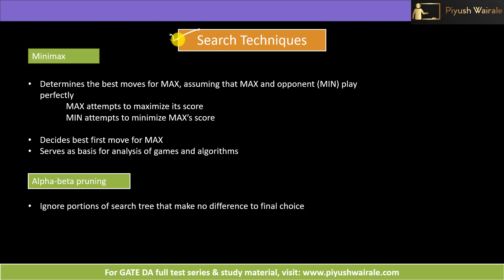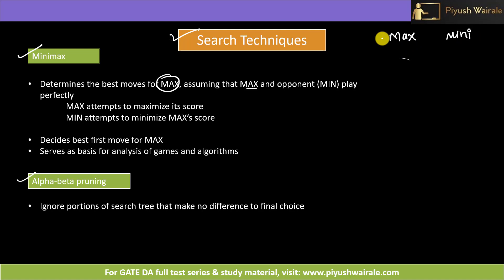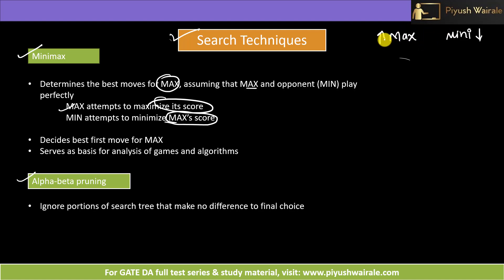There are different search techniques in adversarial search, and we are mostly focusing on mini-max and alpha-beta pruning. Mini-max involves two players named max and min. The max player tries to maximize its chances of winning, and min tries to minimize max's chances of winning. Max attempts to maximize its score, and min attempts to minimize the max score. That is why we call it the mini-max algorithm.